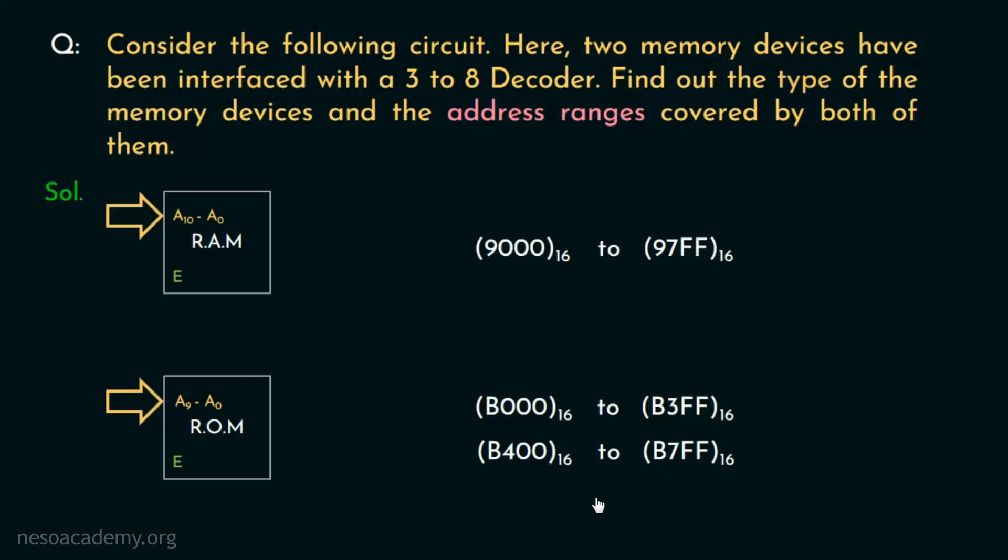To be precise, the ROM will have 2 different addresses pointed to each of the memory locations. Interesting, right?